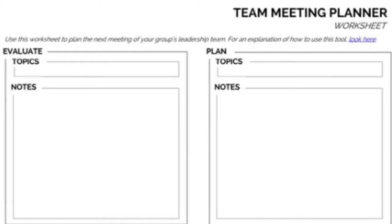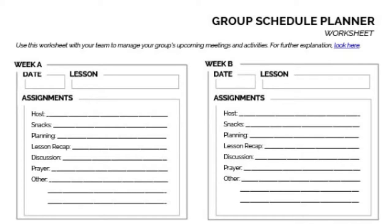The second area, after you evaluate, is to Plan. Based on your evaluation, talk about what you need to do next to help the group and its members move forward. Are there major steps or initiatives that need to be taken? What series are you going to study next? Are there special events to plan? For the nuts and bolts of planning group meetings, there's another worksheet called the Group Schedule Planner that helps you plan week by week for a month at a time.